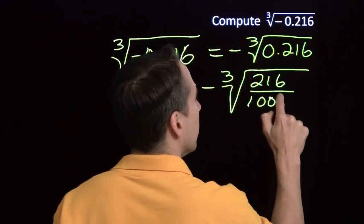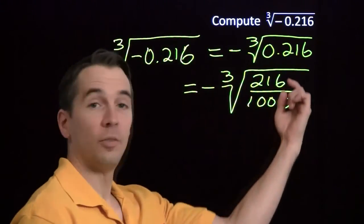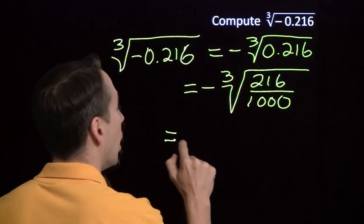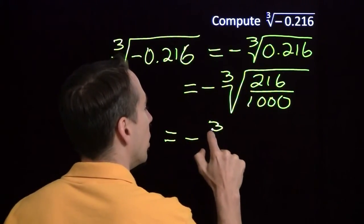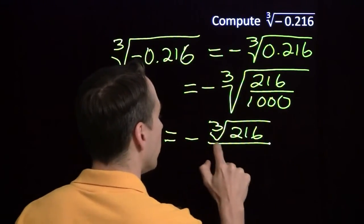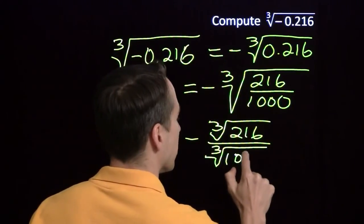And now I'm looking at the cube root of a quotient. Well, we can just use one of our exponent rules there. We can also look at this as a quotient of cube roots. Just take the cube root of 216 over the cube root of 1,000.